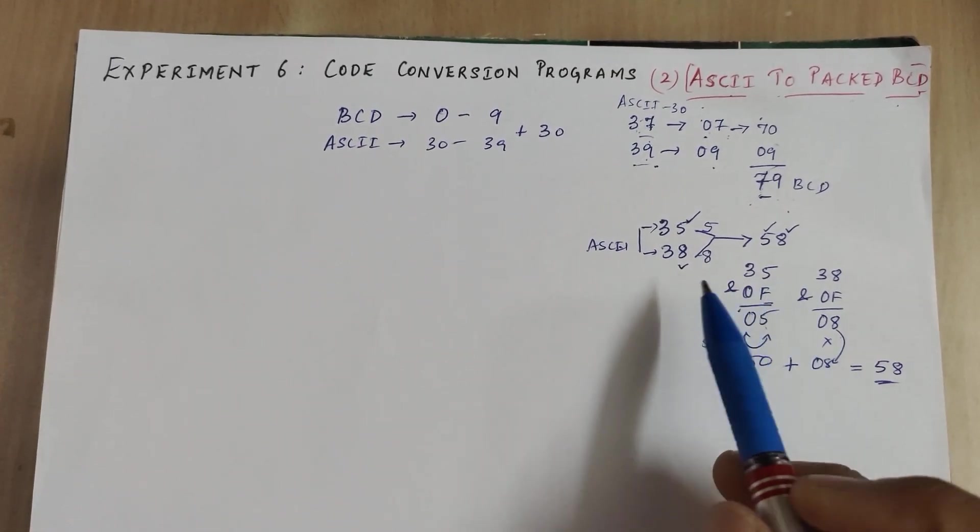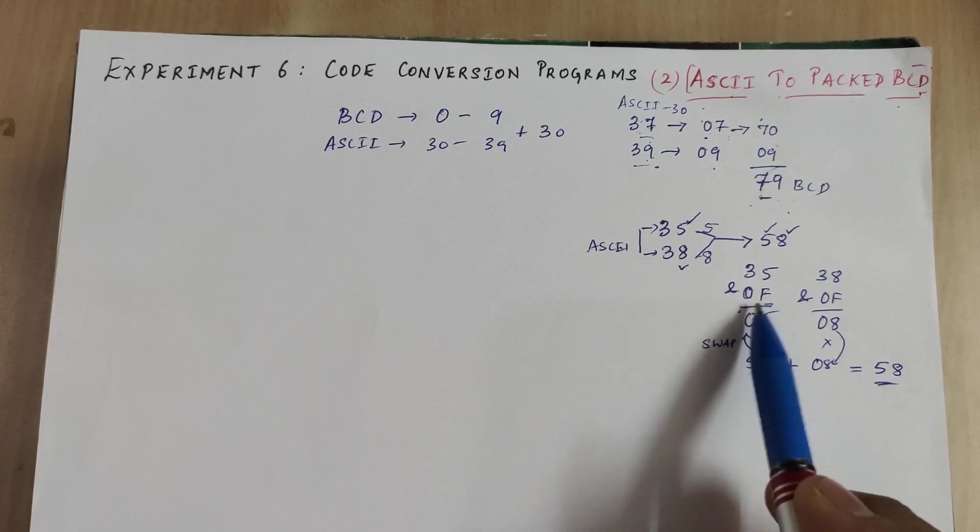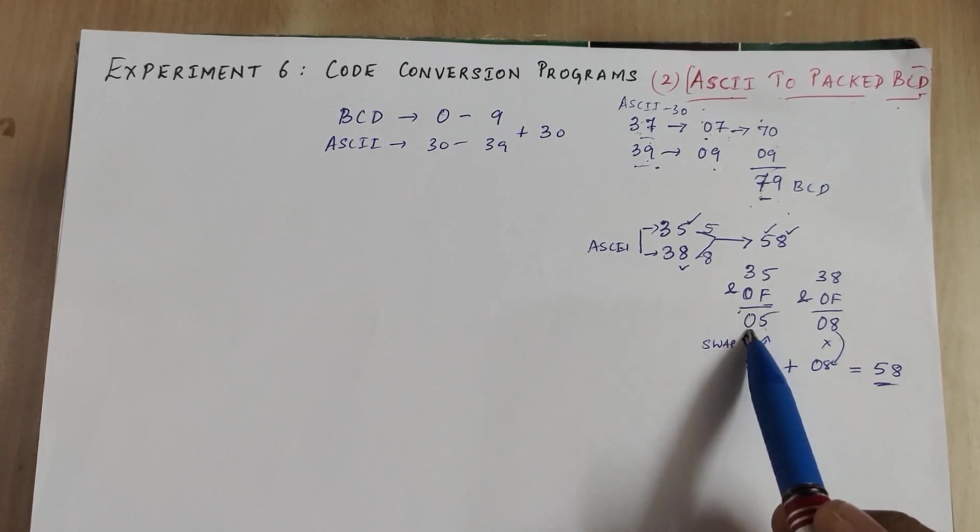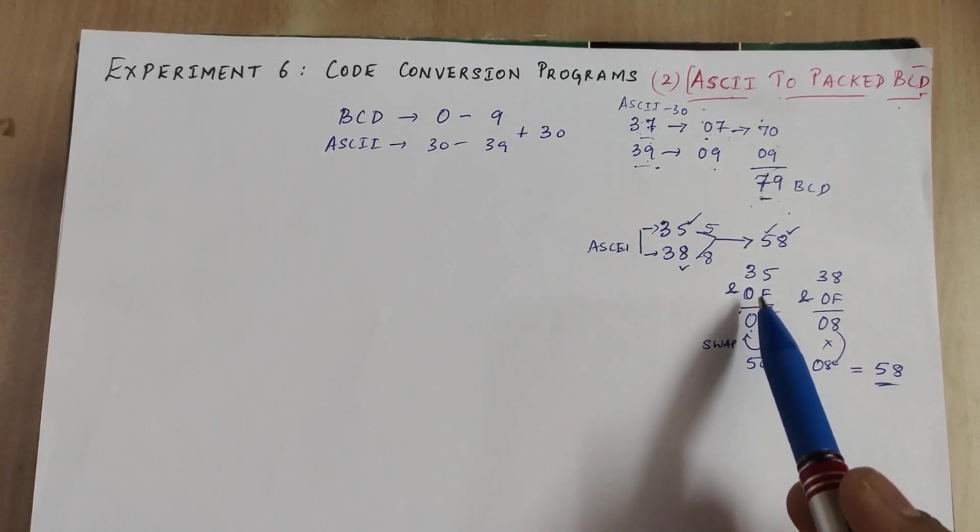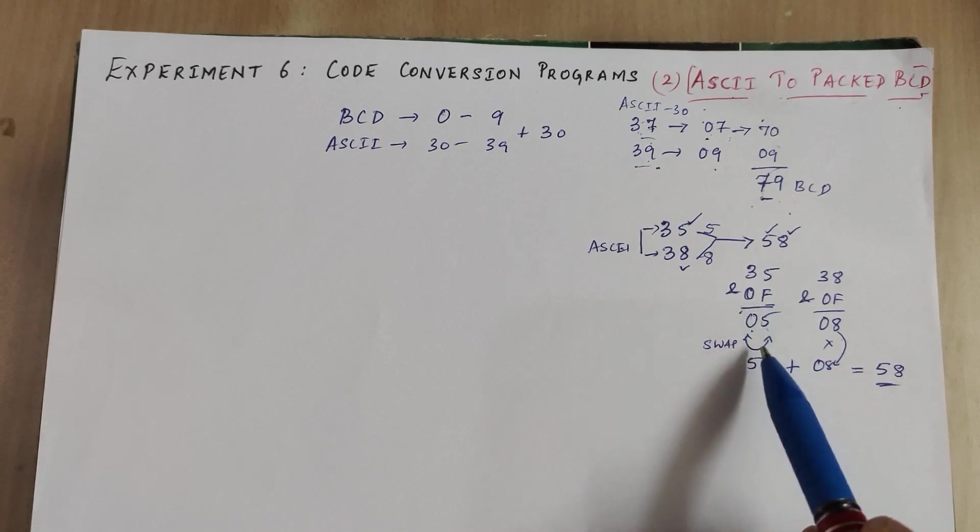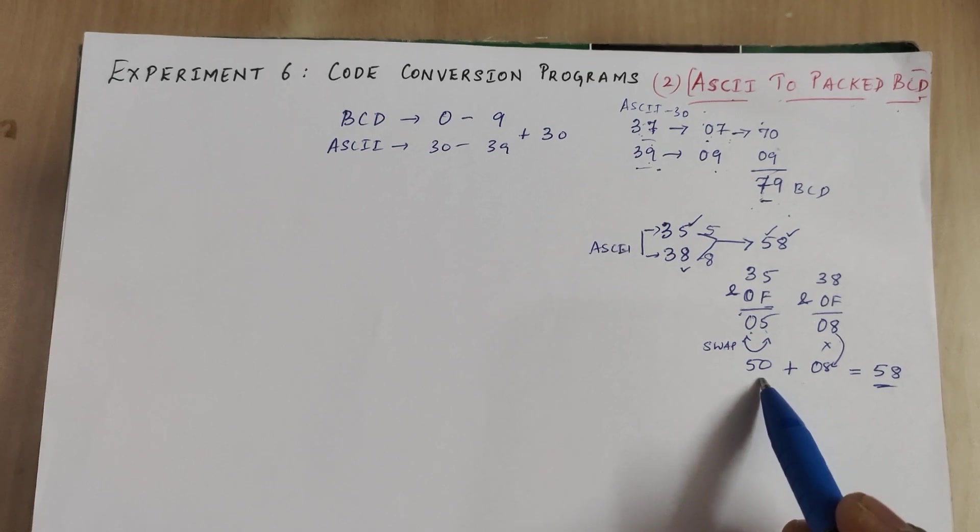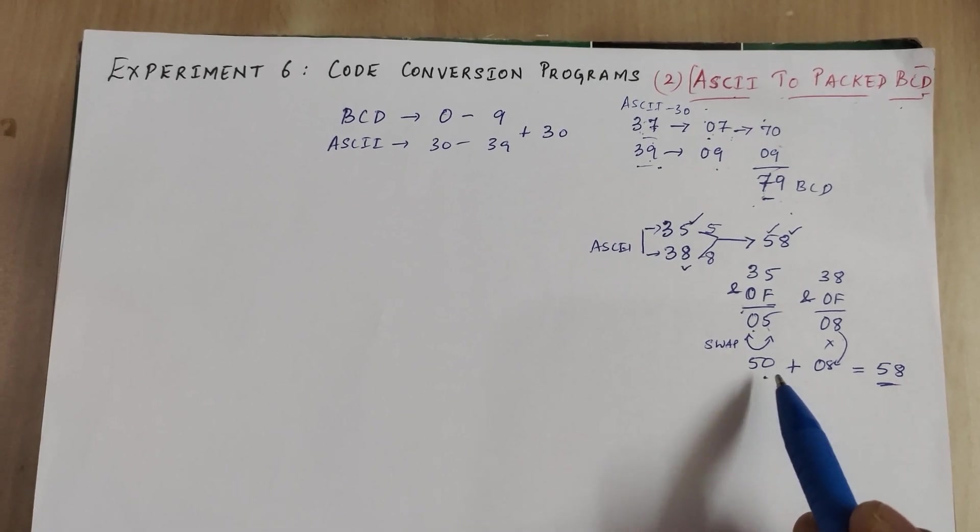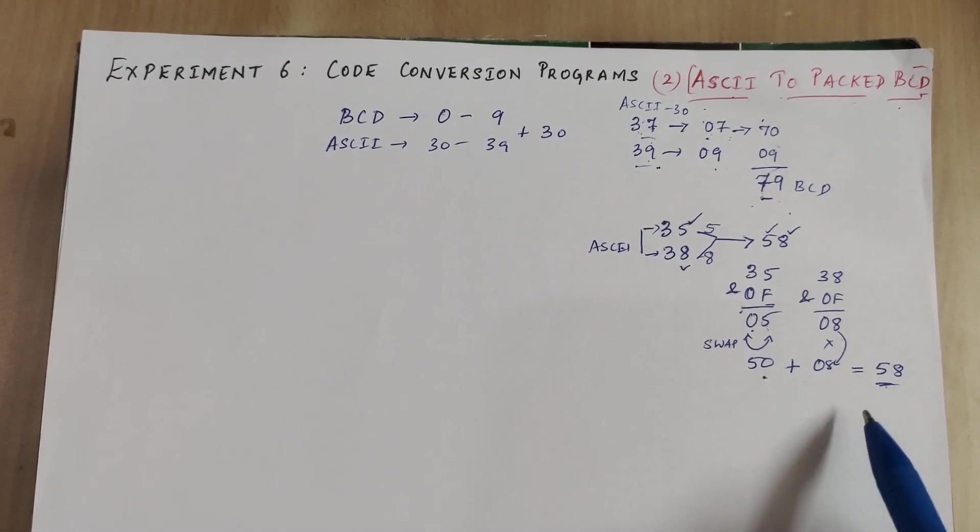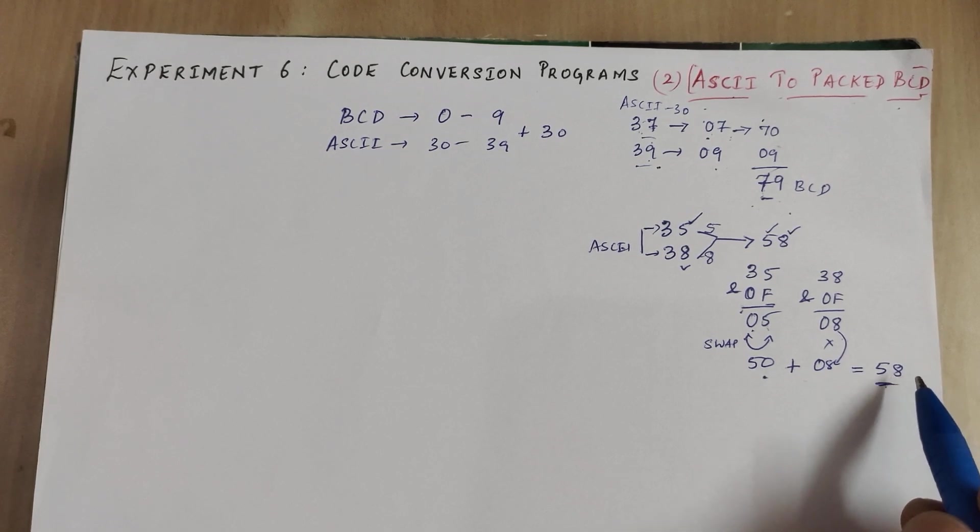I hope the logic is clear to you. We take the two ASCII numbers, AND them with 0F, swap the first ASCII number because that is the MS digit, and then add the LS digit to that most significant digit to get 58 or the packed BCD number.